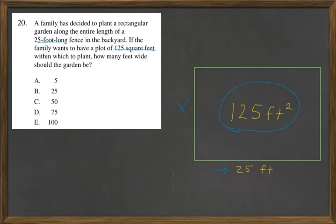So let's set that up as 25 times x equals 125.